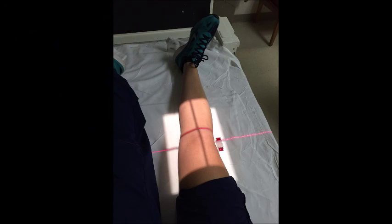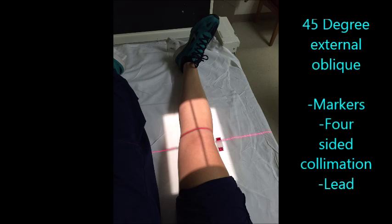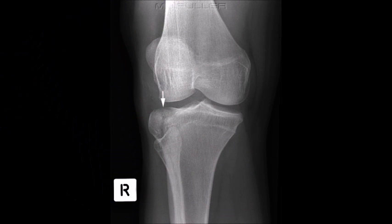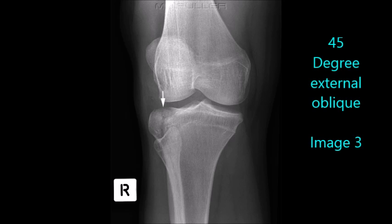For the external oblique, rotate the entire leg externally 45 degrees. Direct your central ray to the midpoint of the knee at a level half an inch distal to the apex of the patella. With collimation, be sure to include part of the femur and tib-fib.